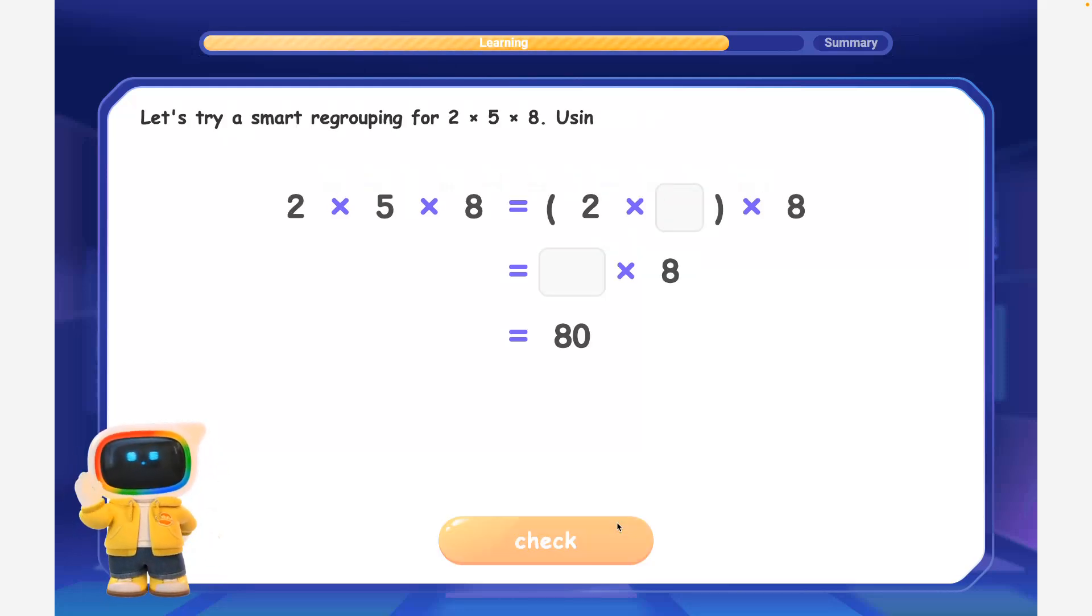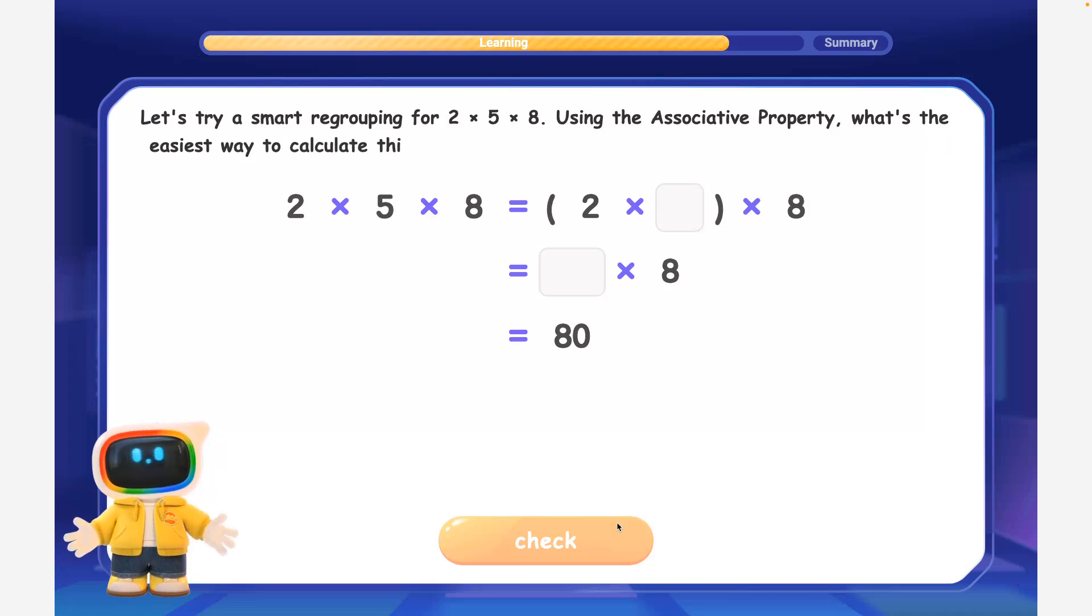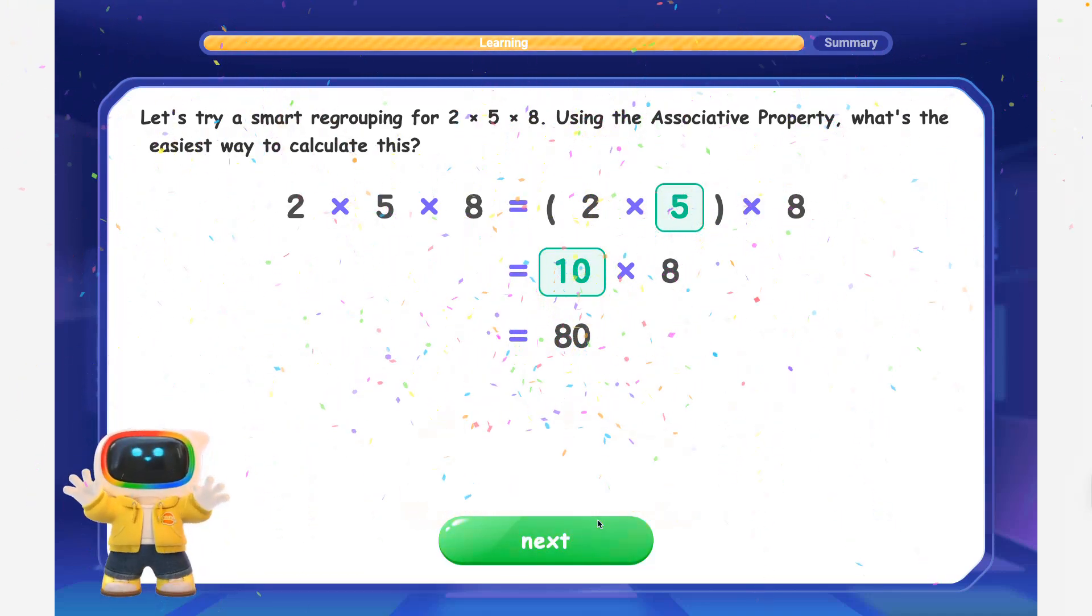Let's try a smart regrouping for 2 times 5 times 8. Using the associative property, what's the easiest way to calculate this? Great job! Doing 2 times 5 first makes it easier. 10 times 8 is equal to 80. That's the associative property!